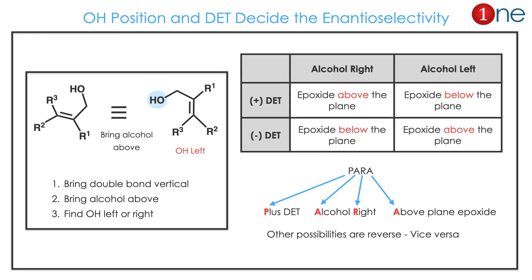The easy trick for this is 'para': para means plus DET, alcohol right position, epoxide above the plane. It will be very easy. All other possibilities are vice versa.